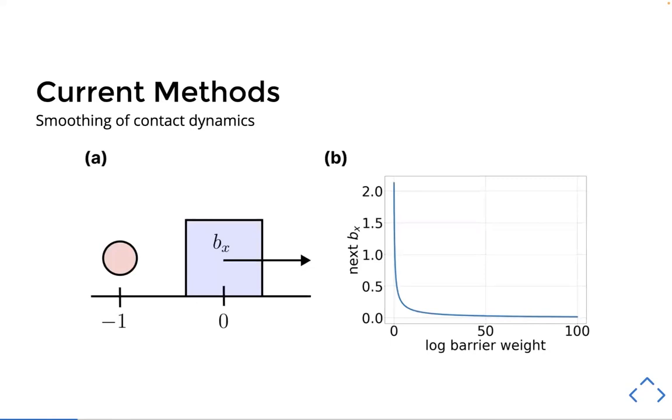Another way that people deal with this is to smooth out these contact dynamics. So this has the effect of making objects be able to apply force to each other at a distance. And one way people have done this is the contact dynamics are formulated as an unconstrained optimization problem, where the contact constraints, which are normally in the constraints, are moved to the objective of a log barrier function. And so this becomes kind of like a penalty for violating the contact constraints, but it allows it to happen.